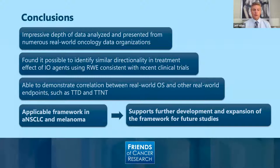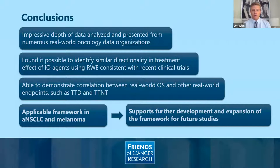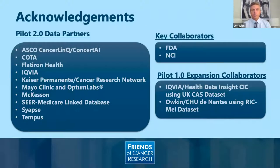What we saw from all of the participating collaborators yesterday was that an impressive depth of data was able to be analyzed from numerous different real world oncology data organizations. We found that it was possible to identify similar directionality and treatment effect of immuno-oncology agents using real world evidence that was consistent with recent clinical trials. The groups also showed the ability to demonstrate correlation between real world overall survival and other real world endpoints, such as time to treatment discontinuation and time to next treatment. Performing these analyses across 10 independent data sets indicates that these observations are not a unique attribute to any individual data set. In addition, we saw that this framework was able to be expanded from advanced non-small cell lung cancer to provide similar results in melanoma. All of this work together supports the further development and expansion of the framework for future studies.